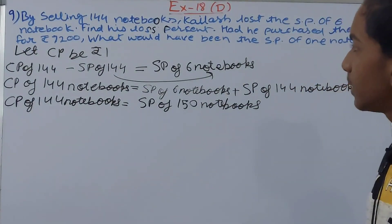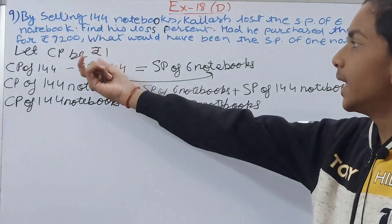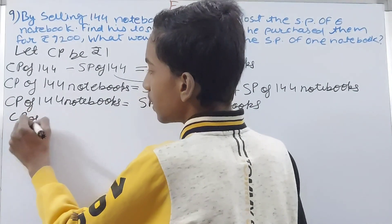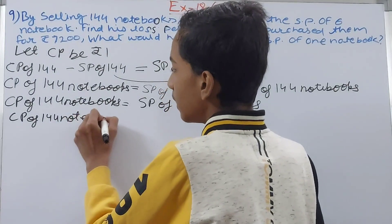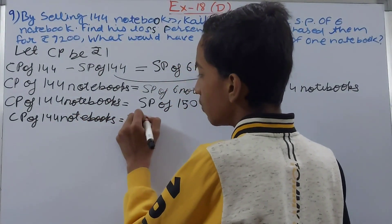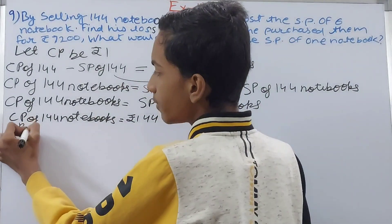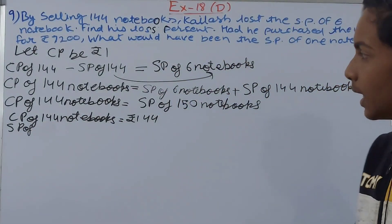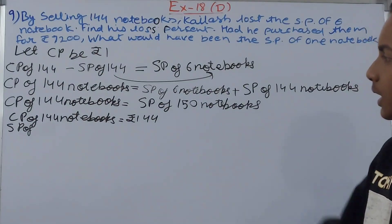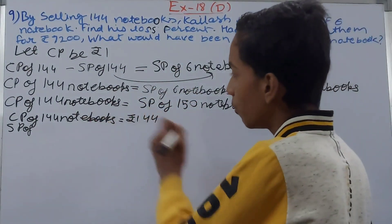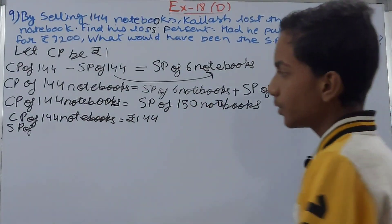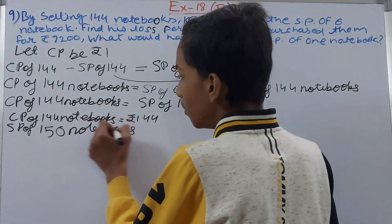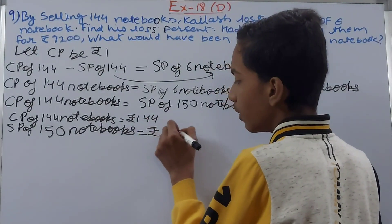Now we solve using our assumption that CP = Rs. 1. So CP of 144 notebooks becomes Rs. 144. And since CP of 144 notebooks equals SP of 150 notebooks, the SP of 150 notebooks is also 144. Therefore SP of 150 notebooks = Rs. 144.